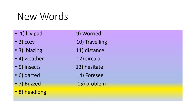Now let's read the new words that you have come across in the story. I want everybody to write these five times in their book as you normally do, and learn the spellings. Read with me: lily pad, cozy, blazing, weather, insects, darted, buzzed, headlong, worried, travelling, distance, circular, hesitate, foresee, problem. Children, as usual, you will read the lesson, learn to read it well, and learn the spellings and the new words. Thank you and have a nice day.